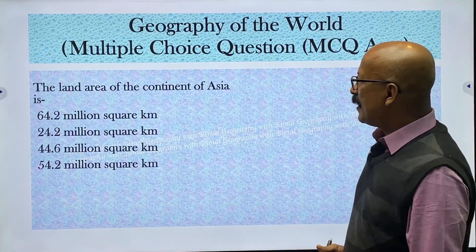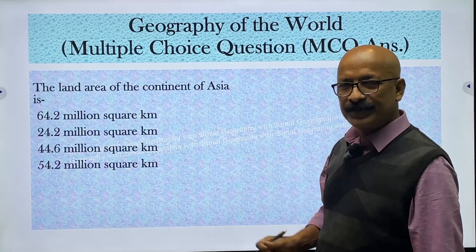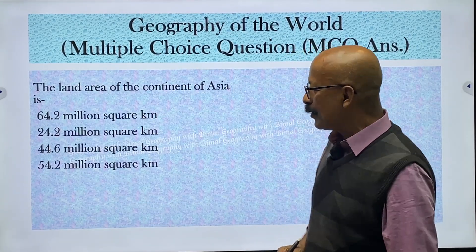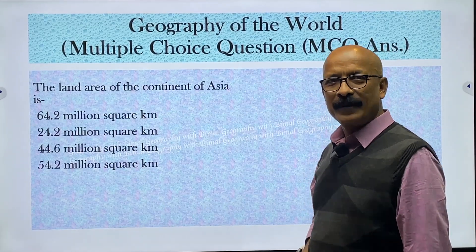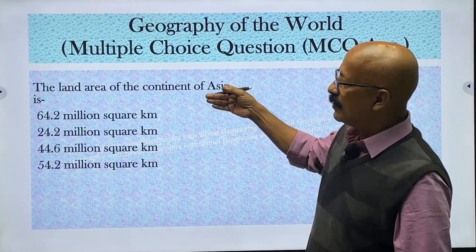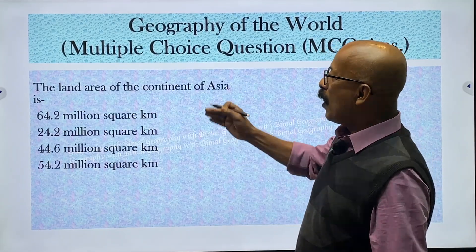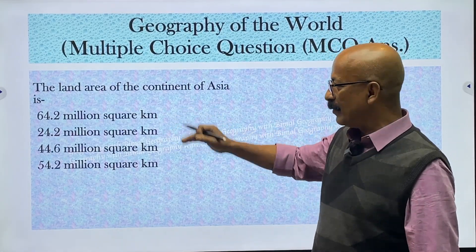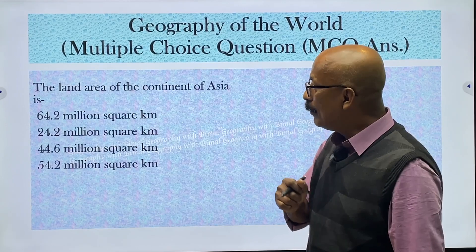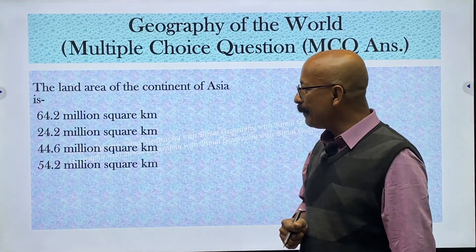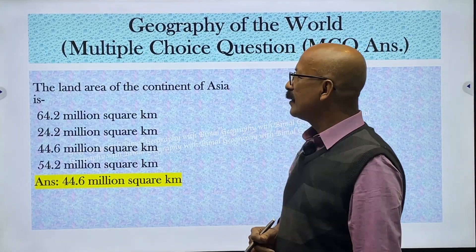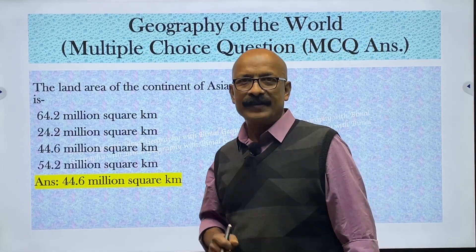First question: the land area of the continent of Asia is how much? The options are 64.2 million, 24.2 million, 44.6 million, and 54.2 million square kilometers. Just observe these questions and guess the answer before I display them on the board — it will make a revision for you. The correct answer is 44.6 million square kilometers. It is the land area of the continent of Asia, the largest continent.